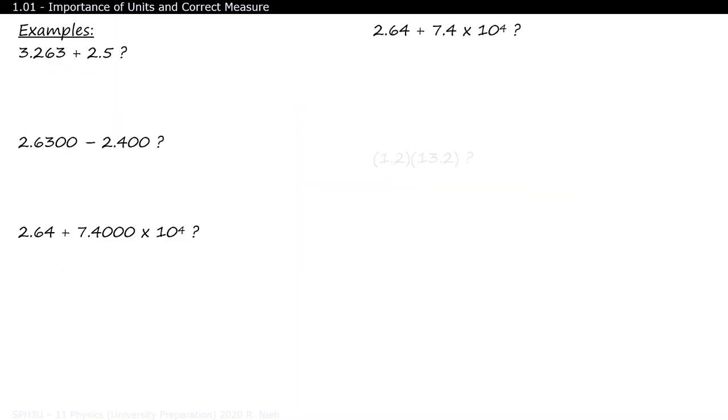Practice makes perfect, so how about you pause the video and work through the remaining examples. Ready for the answers? If we add 3.263 with 2.5, we initially get the answer of 5.763. However, 2.5 has a precision of 1 decimal place, so our final answer should be rounded to 1 decimal place as well, or 5.8.